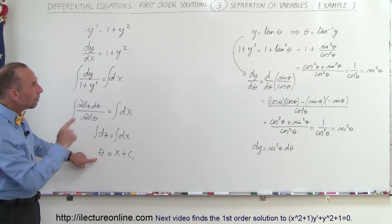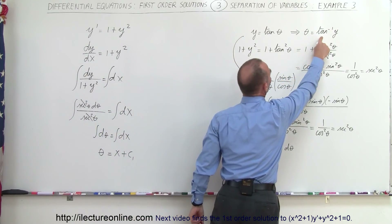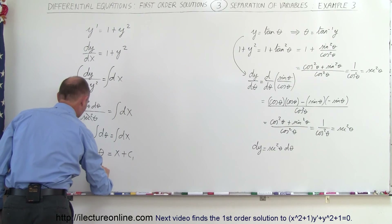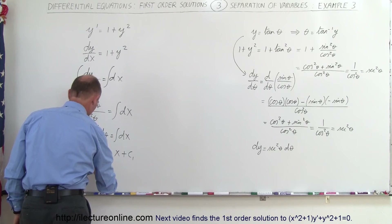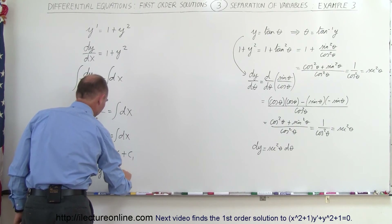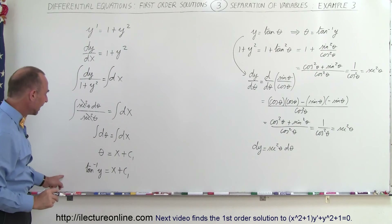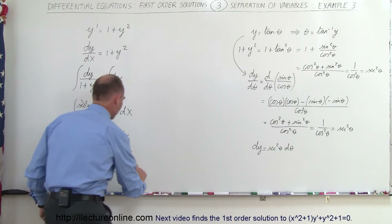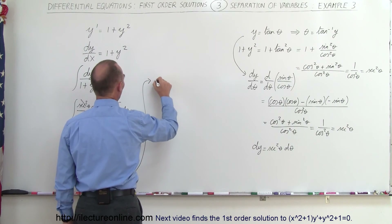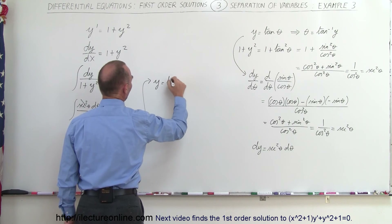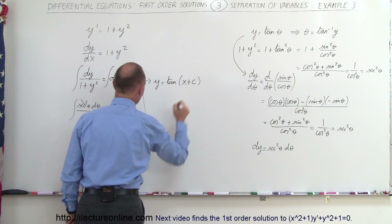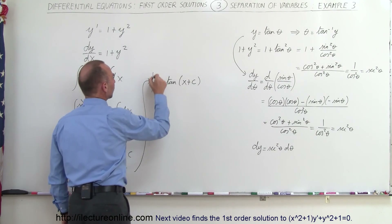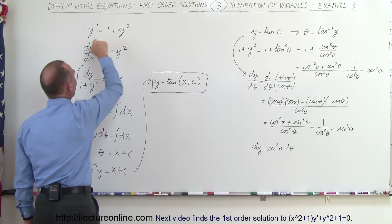Now theta can be written as the arctangent of y. So the inverse tangent of y equals x plus c1. Taking the tangent of both sides, since the tangent of the arctangent of y simply gives y, we get y equals the tangent of x plus c. We don't need to transform the constant — we can leave it as just any constant. And that is the solution to our differential equation.